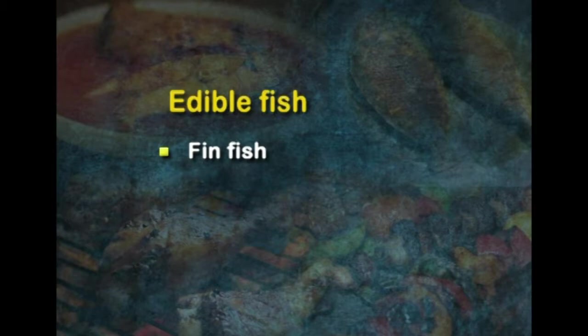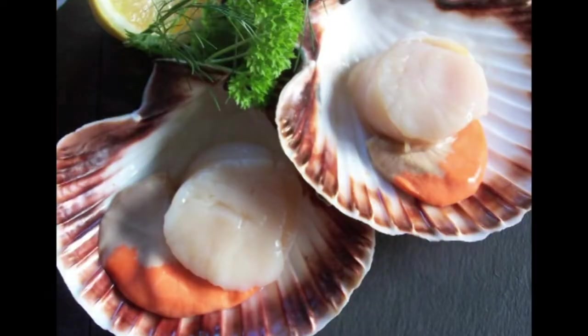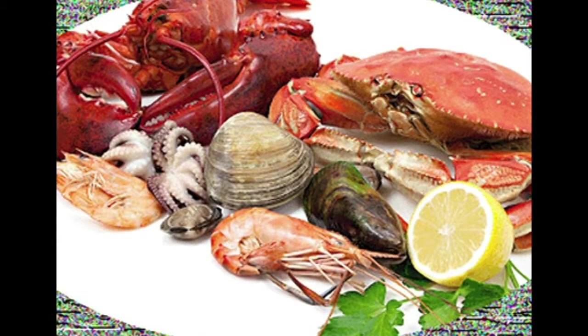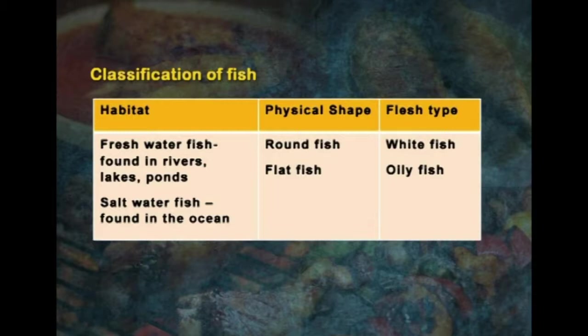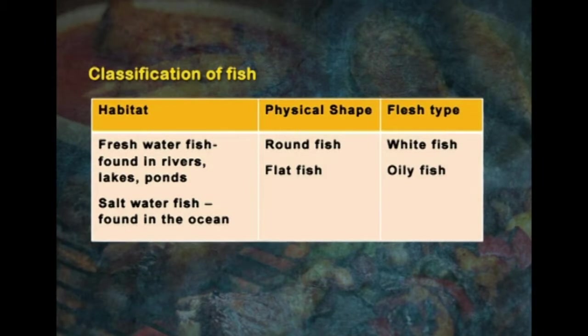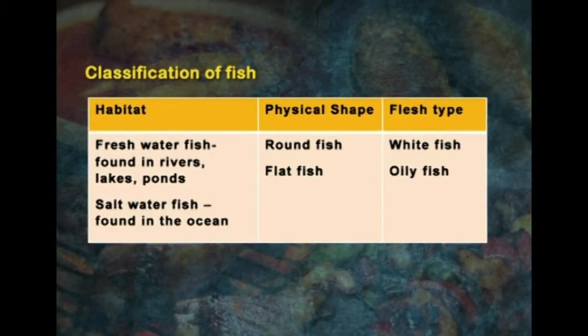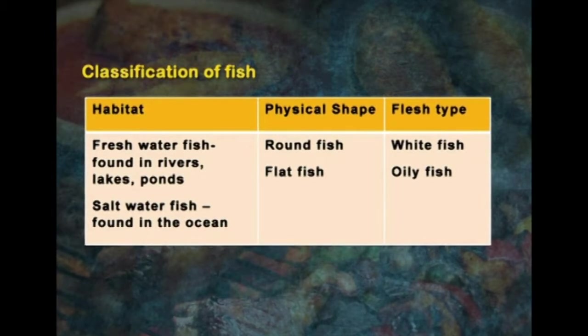The fourth module under fleshy foods is fish and seafood. Edible fish are mostly classified as either fin fish or shellfish. Fish are aquatic vertebrates with fins for swimming and gills for breathing. Shellfish are aquatic invertebrates with shells or carapaces. Fish are classified on various categories — depending on where they are found, for example freshwater fish and marine fish or saltwater fish.